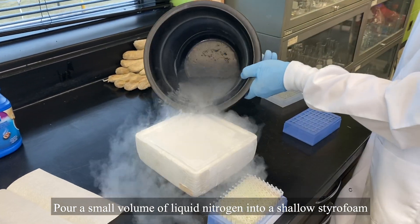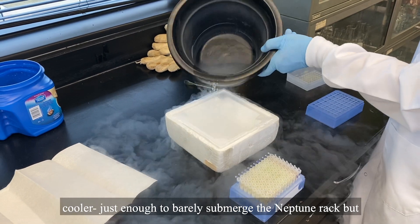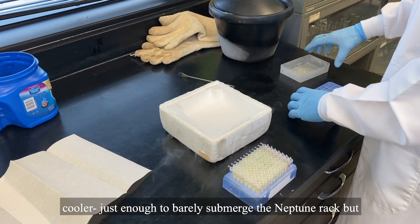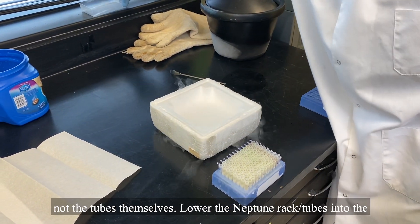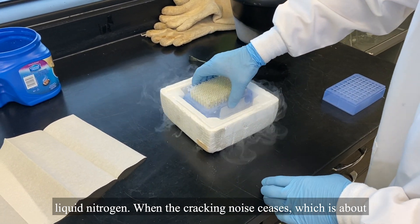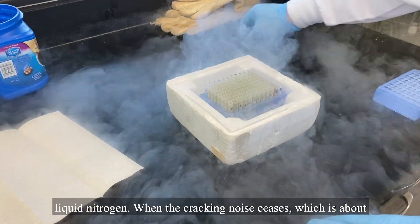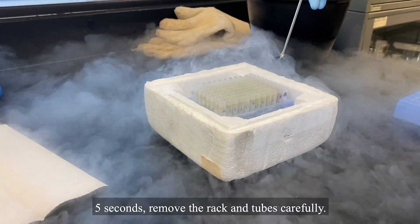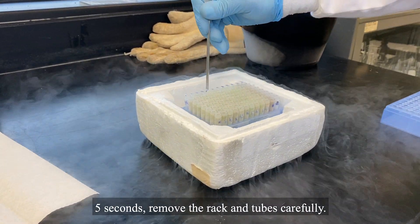Pour a small amount of liquid nitrogen into a shallow styrofoam cooler, just enough to barely submerge the Neptune rack but not the tubes themselves. Lower the Neptune rack tubes into the liquid nitrogen. When the cracking noise ceases, which is about 5 seconds, remove the rack and tubes carefully.